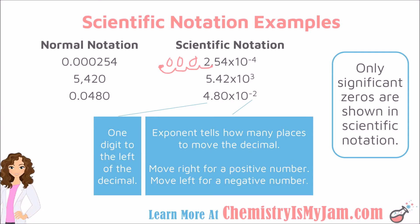In the next example, I have a positive exponent, so I am going to take that decimal and move it 3 places to the right. My new decimal is here, and this empty space gets a zero. So my number becomes 5420.